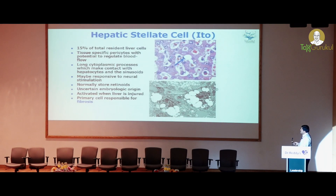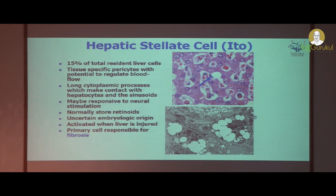These are the hepatic stellate cells. They are very important because they are responsible for fibrosis. If you see any fibrosis, that is the end stage and the liver cannot regenerate. They form about 50 percent of the resident liver cells and are tissue-specific with the potential to regulate blood flow. They have long cytoplasmic processes and contain retinoids. This EM photograph shows the retinoids, that is the lipid you are seeing here. These hepatic stellate cells are also called Ito cells.